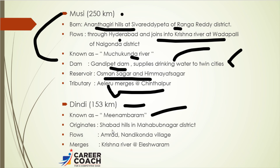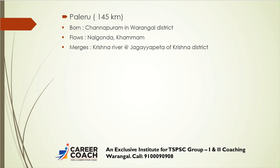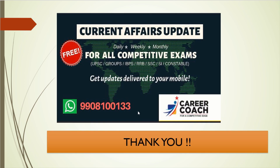The Dindi river is 153 kilometers long, also known as Menambaram. It originates at Shahabad hills in Mahabubnagar district, flows through Ambrad and Nandikonda village, and finally joins the Krishna river at Eleshwaram. The Paleru river is 145 kilometers long; it originates at Chennapuram in Warangal district, flows through Nalgonda and Khammam, and finally joins the Krishna river at Jaggayapeta in Krishna district. With this, we have covered the historical and geographical background of Telangana, its importance, symbols, rivers, and tributaries.